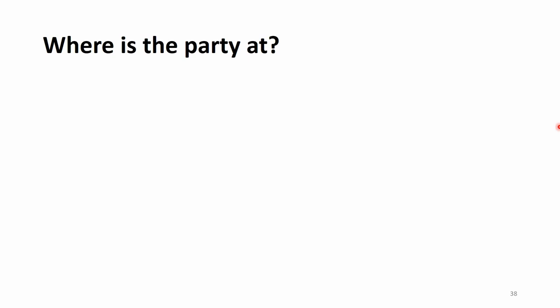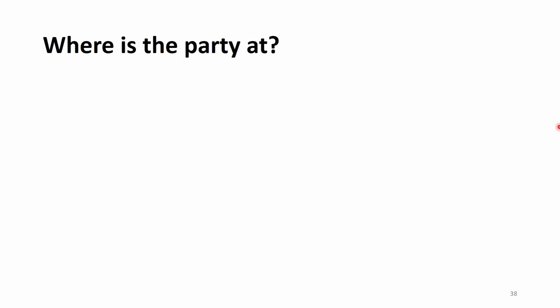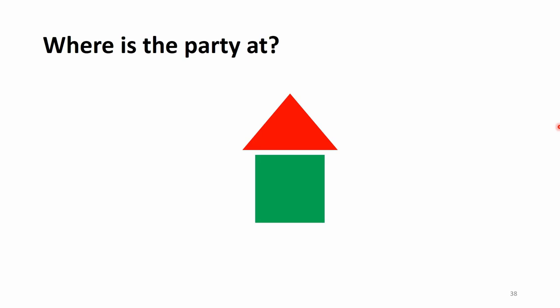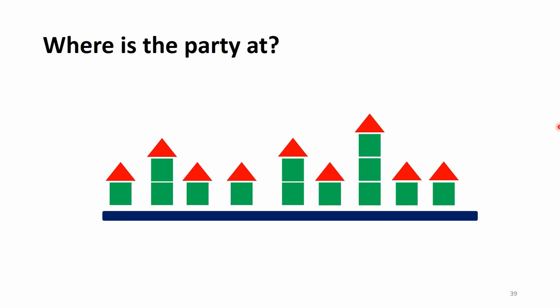We still need to drive home the message about why these markers are so important. For this purpose, we use an example I call 'Where is the party at?' In this example, our goal is to find a party held in a certain house. You want to go to this party, which is in a city you've never been to. The house is on a very long road, and your goal is to find the exact house with the party. It's a very long road, so going into each house is not a good idea.